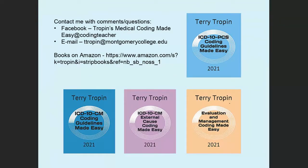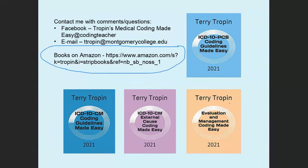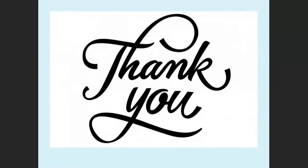That completes this video. If you have questions or comments, please feel free to contact me. I'll be posting videos on characters 6 and 7 in the next few weeks. Here are the books I've written on coding — available on Amazon. You can get them through the link or search 'Tropin' on Amazon books. Thank you so much for listening. I hope to have more lessons up soon.